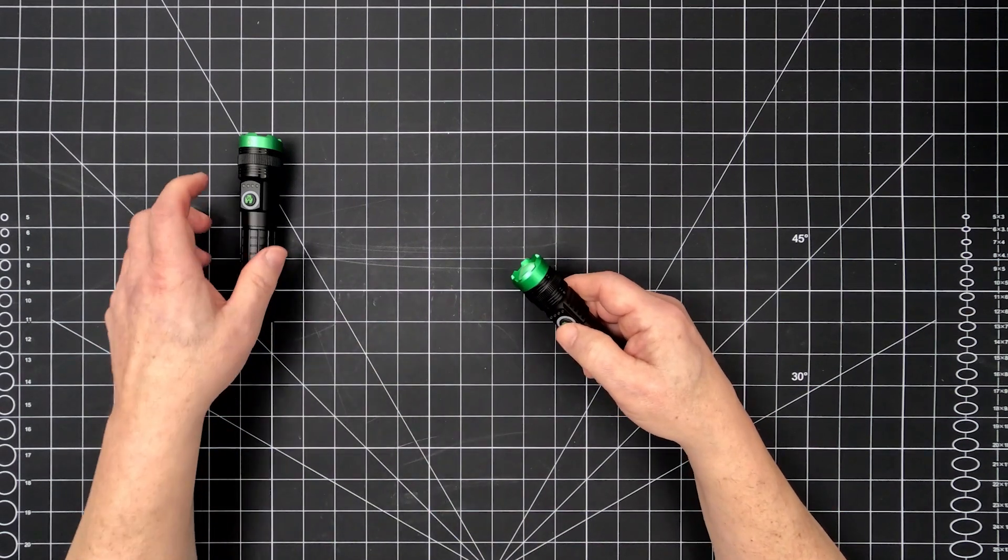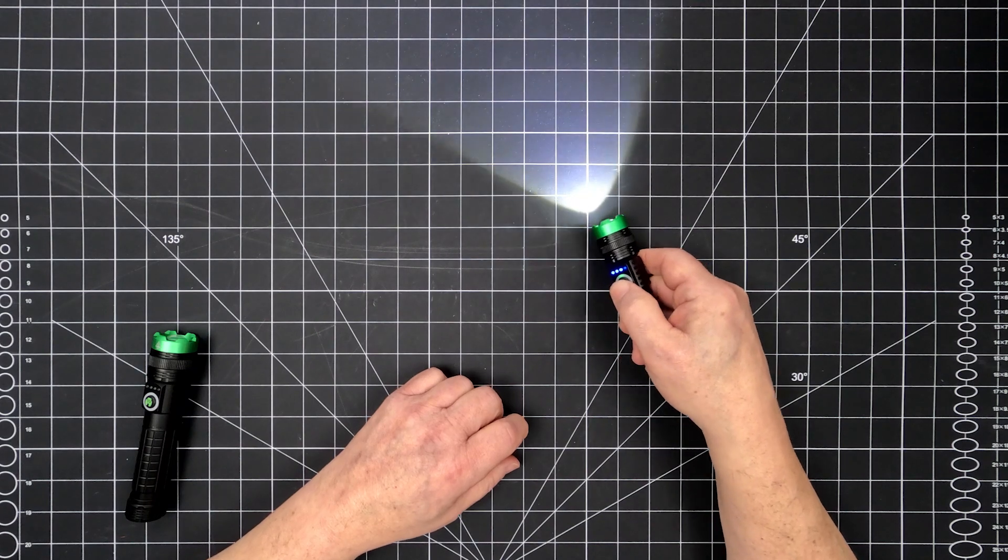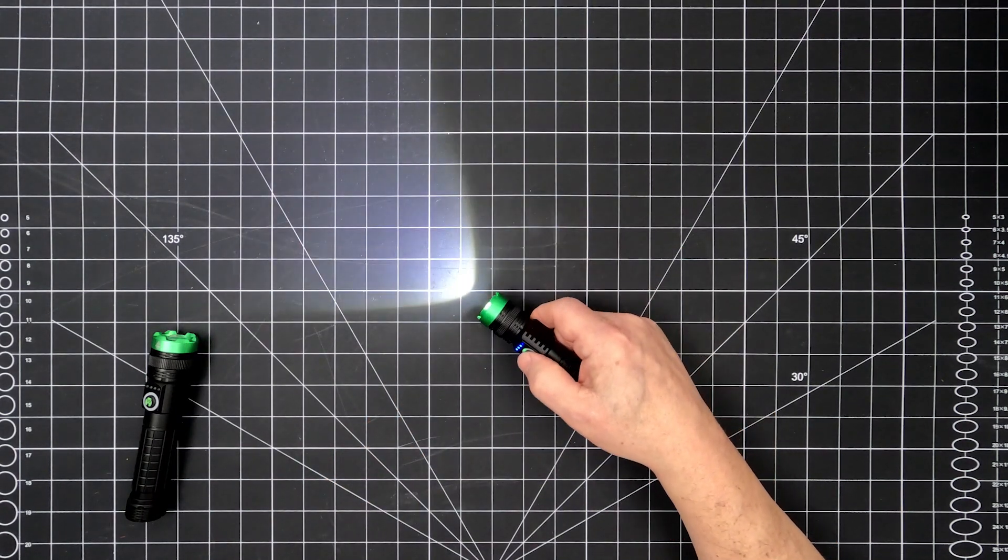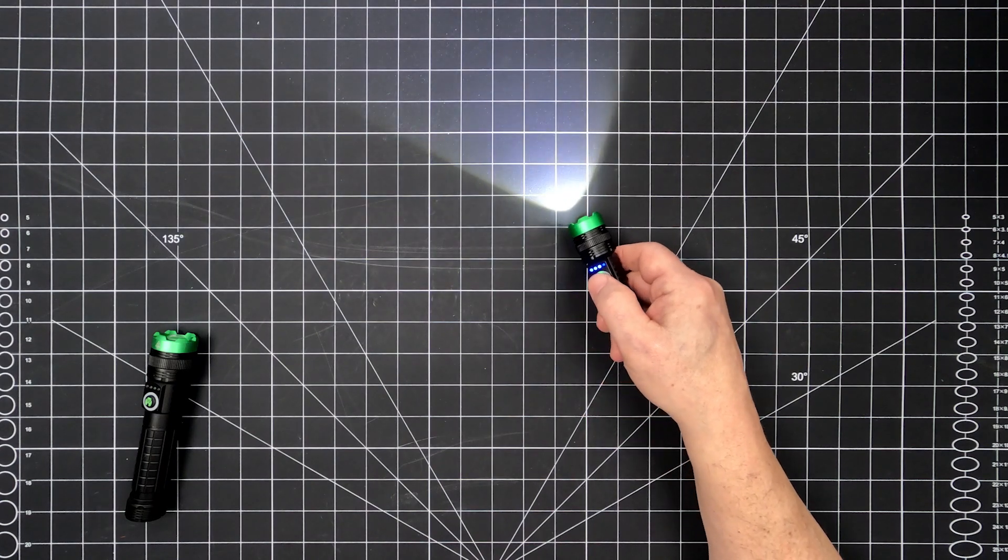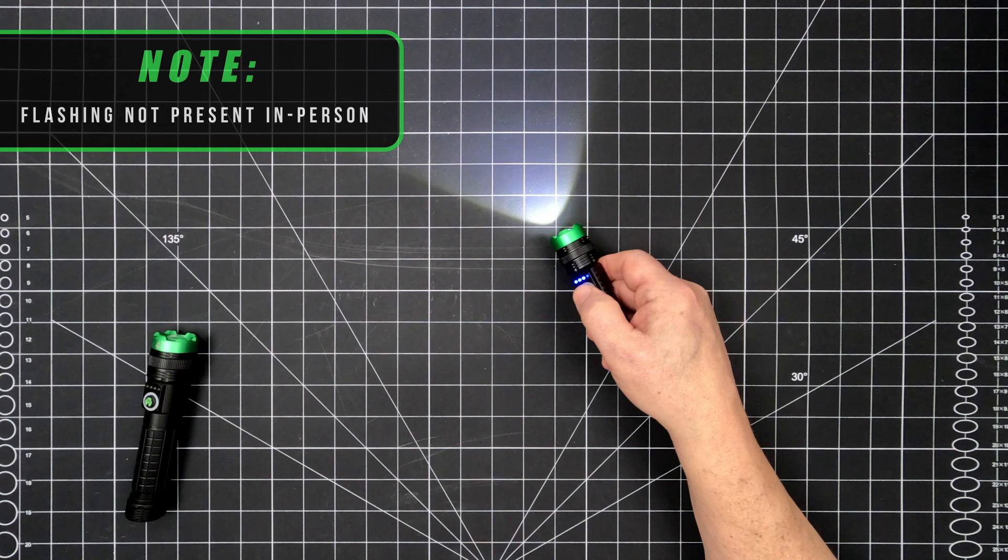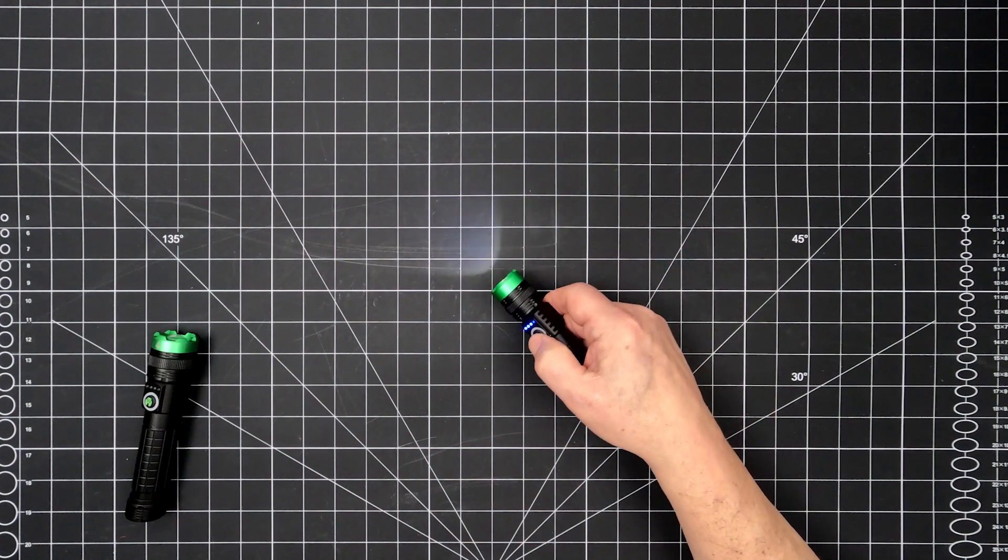With the flashlight unlocked, select your desired brightness mode. The 1K model is 1100 lumens on high with a 1.2 hour runtime and a 488 foot light throw. Medium is 550 lumens with a 2.2 hour runtime and low is 43 lumens with an 8 hour runtime.